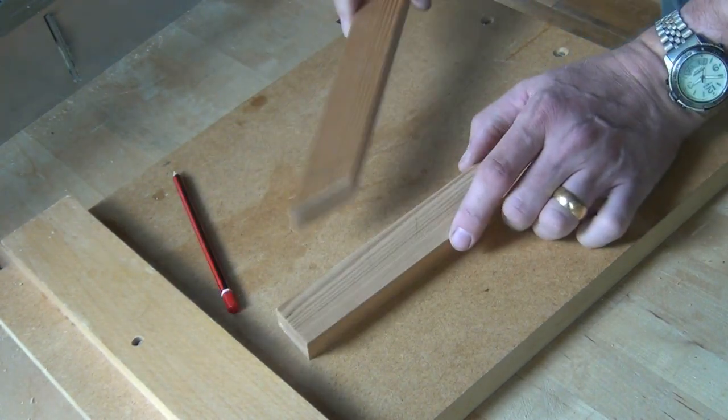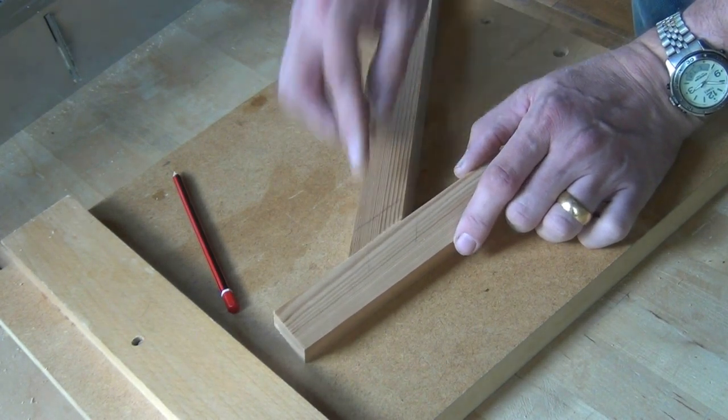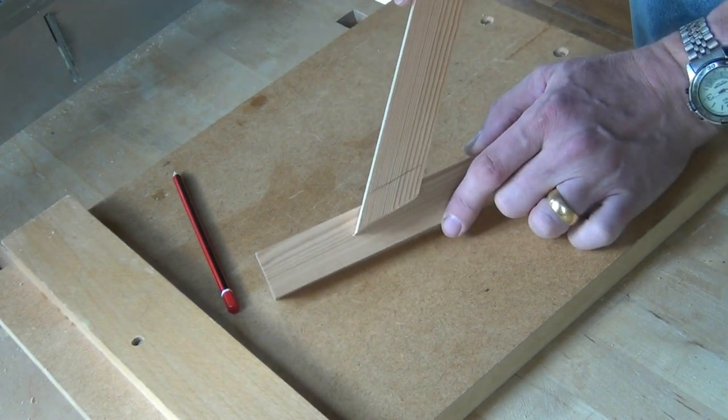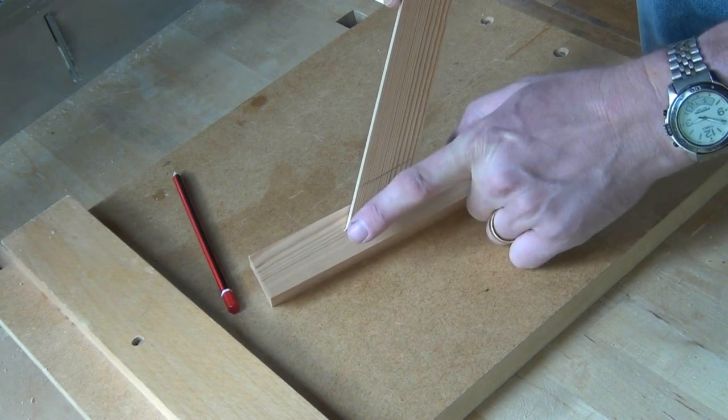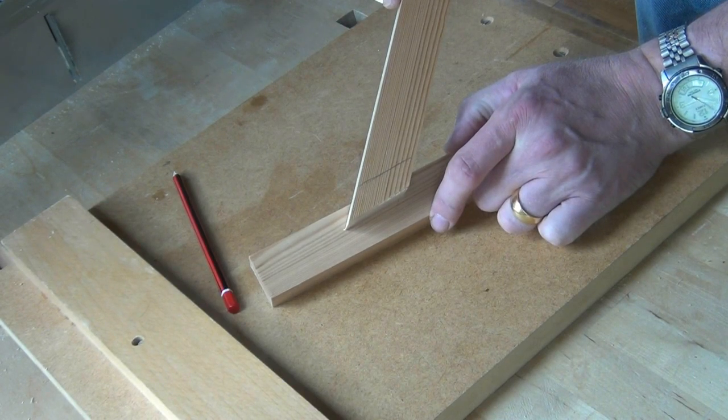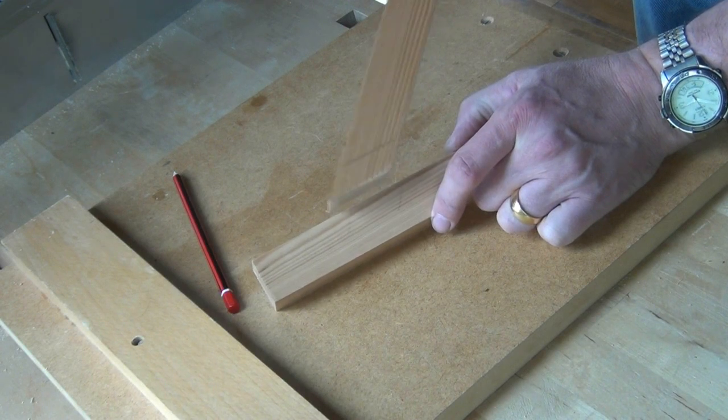If we did that though, when the joint is put together you can see that we've got a sharp edge here and a sharp edge to the tenon inside the mortise as well. And there's a tendency when these two pieces are pressed together for that end to break out.